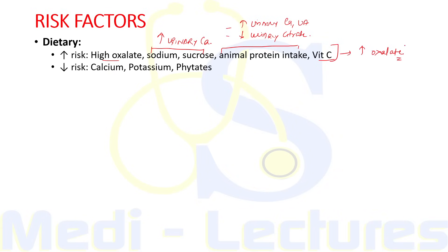Decreased risk is associated with a diet rich in calcium, potassium, and phytates. Increased calcium in diet binds to oxalate and prevents oxalate absorption from the GI tract, therefore decreasing the risk of calcium oxalate stones. Potassium and phytates in the diet decrease urinary calcium excretion.